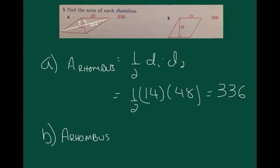Now, in part B, I could use the one-half diagonal 1 diagonal 2 again, but that could mean a lot of work. For here, it's much easier to just use base times height, because, after all, a rhombus is a parallelogram. So, I'm going to use 25 as my base, and my height is 20. So, 25 times 20 equals 500.